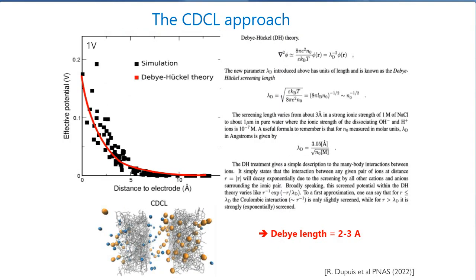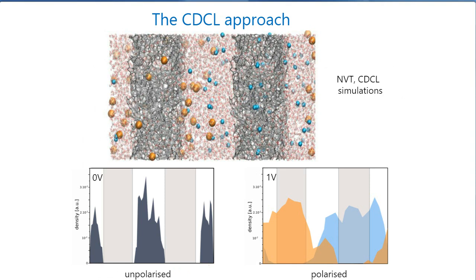Now we have the full picture: not only do we absorb ions inside the gray region — inside the electrode — but we also have ions distributing on the outside. So we have this combined and expected behavior of a supercapacitor: an EDL (electrical double layer) building up on the outside of the electrode, combined with ions docking inside the pores. We combine both effects, as shown in this density plot.